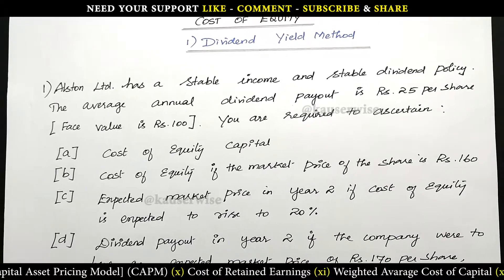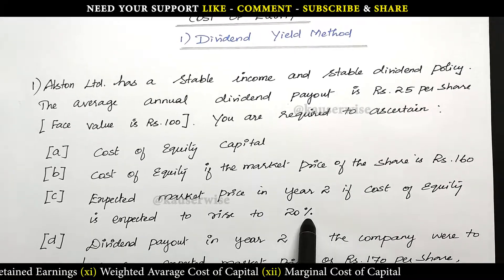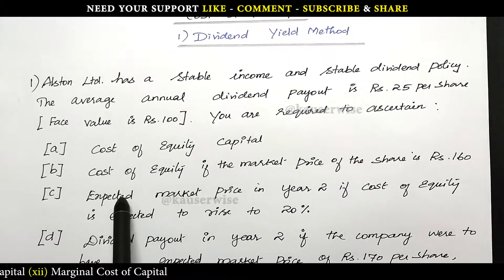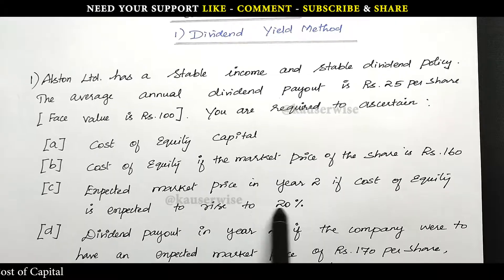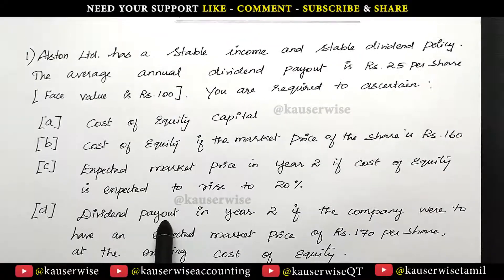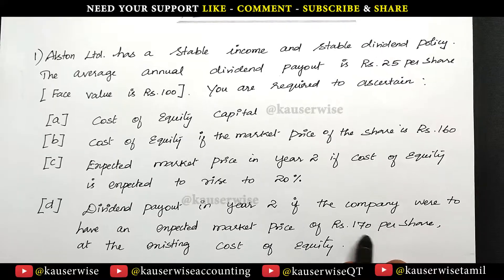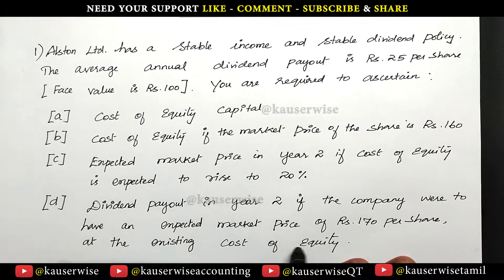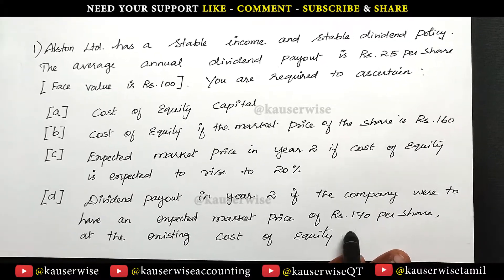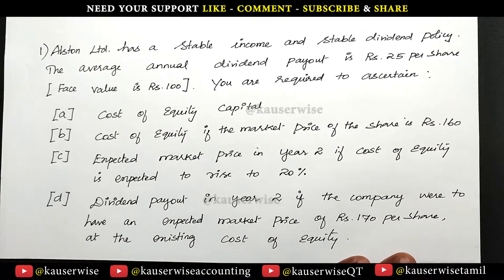The third case asks for the expected market price in year 2 if the cost of equity is expected to rise to 20 percentage. After finding the current cost of equity, we can calculate the market price using the same formula with the cost of equity as the given value. The fourth case asks for the dividend payout in year 2 if the company were to have an expected market price of 170 rupees per share at the existing cost of equity. Here, the missing figure is the dividend payout.